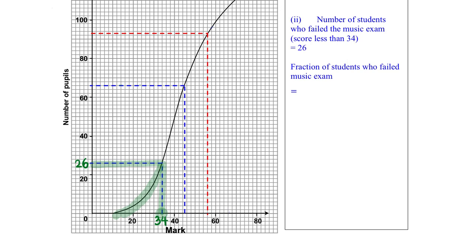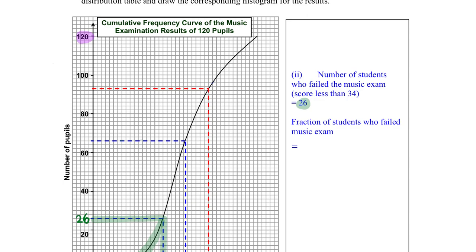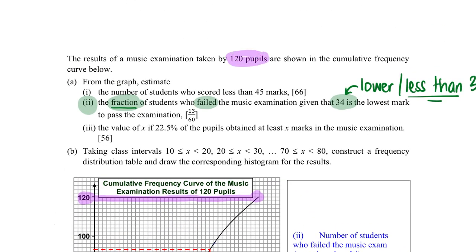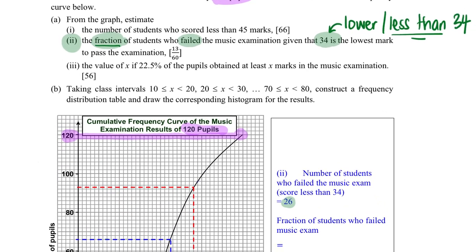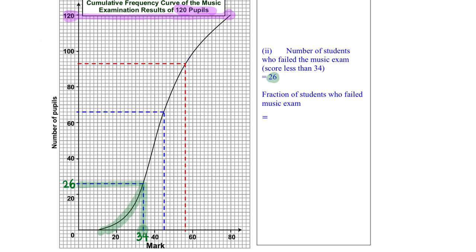Step one: find this 26. After which, for the fraction we need to take into account the total number of students, which is 120 — found from the question. With that I can find the fraction: 26 students out of 120 students who failed this exam. The simplest form will be 13 over 60, and that is the answer for part A2.